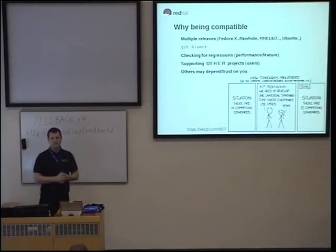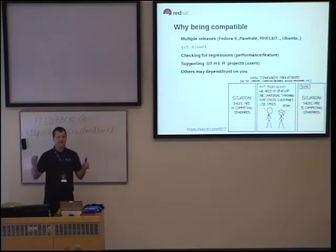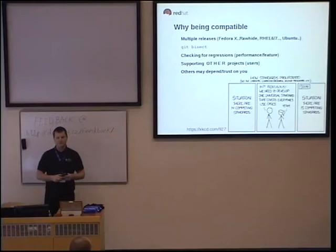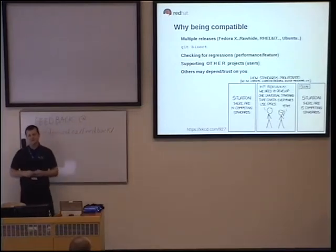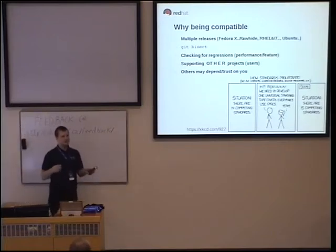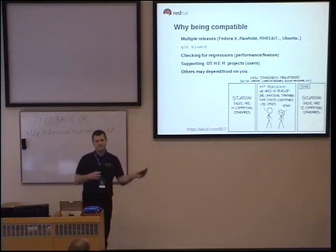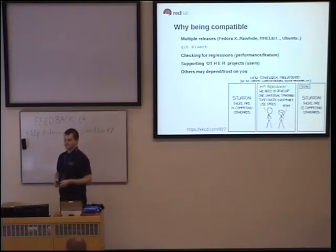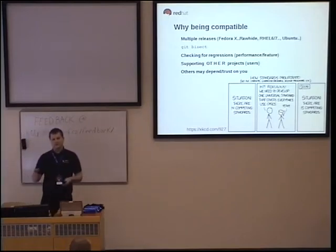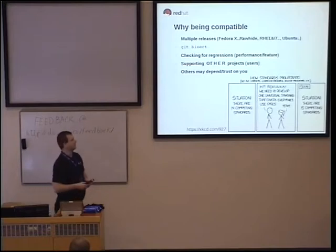So, why be compatible? I often hear from my colleagues that they complain about having to maintain a huge set of backported patches and working on many releases at the same time. In LVM, we take a different approach. We maintain one single upstream branch, which has to be compatible for all releases. So we have the same code base for Fedora Rawhide, Fedora 21, 24, 23, RHEL, and also Ubuntu and other distributions.